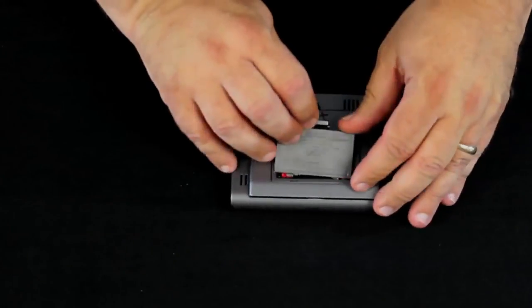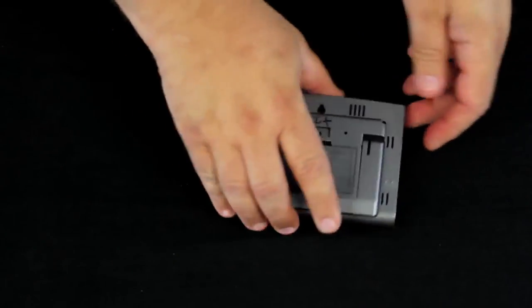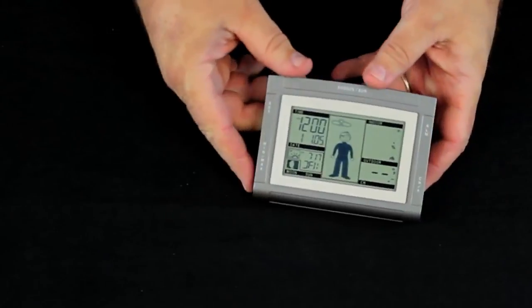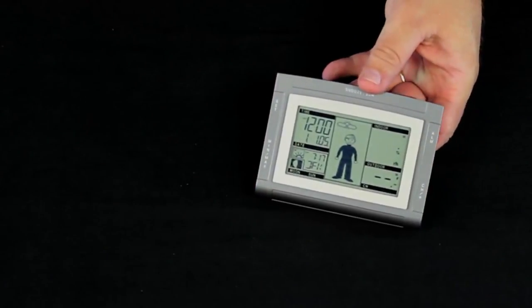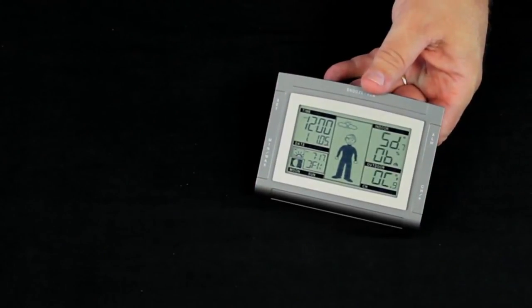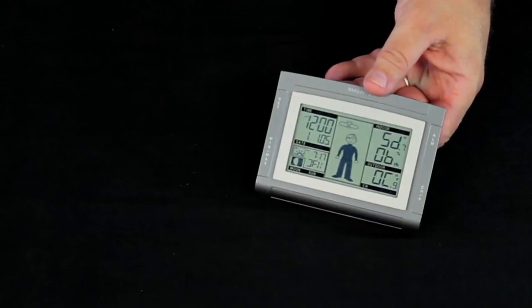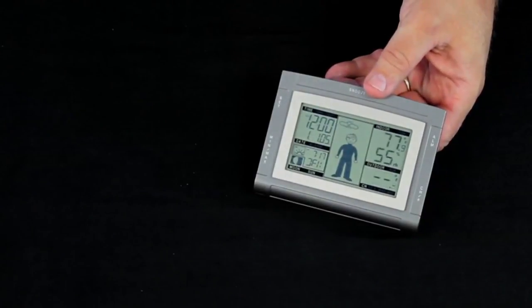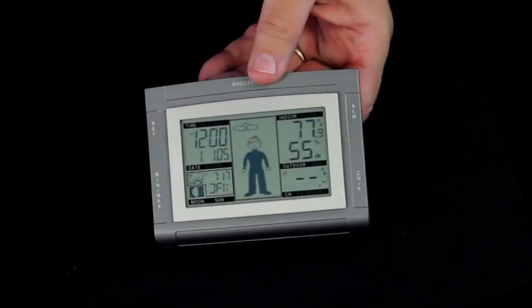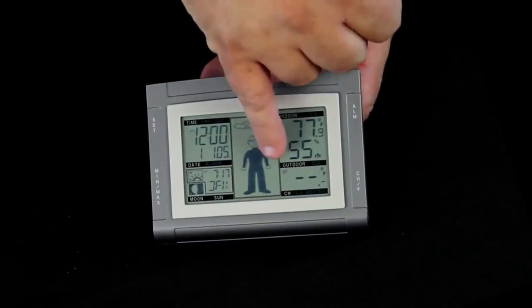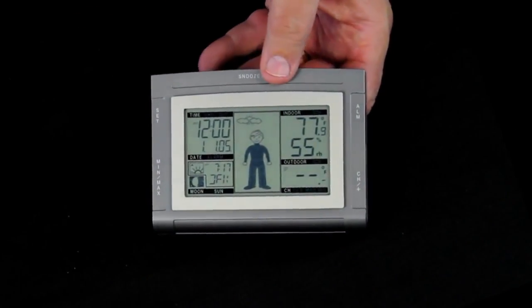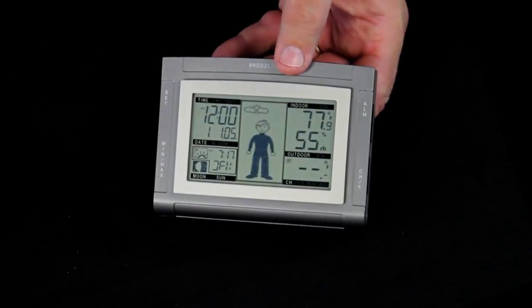The station beeps and very shortly it will start showing us the temperatures. Indoor temperature and humidity and the flashing icon indicates that it is trying to locate the sensor for the outdoor temperature and humidity.